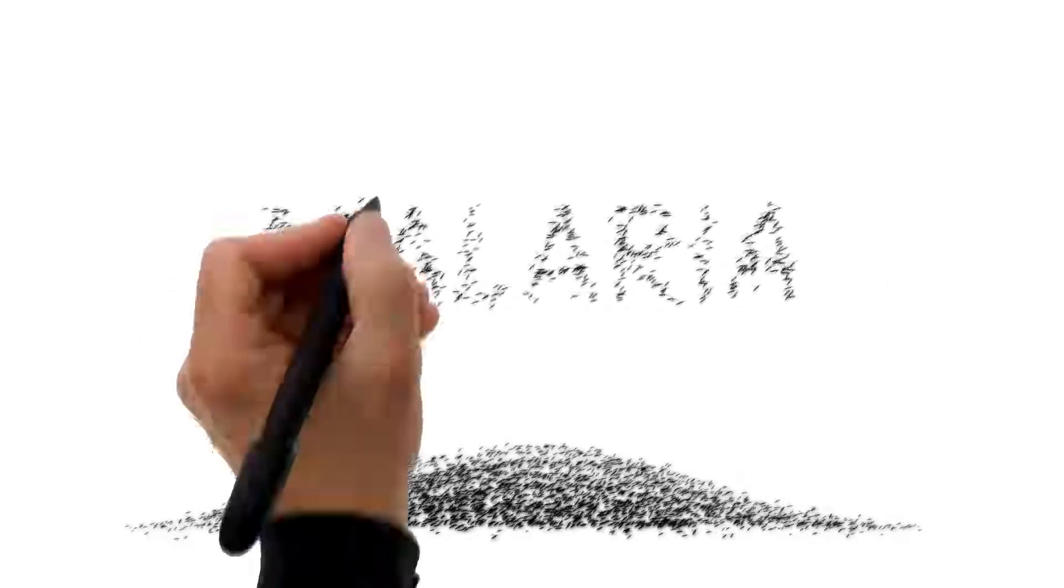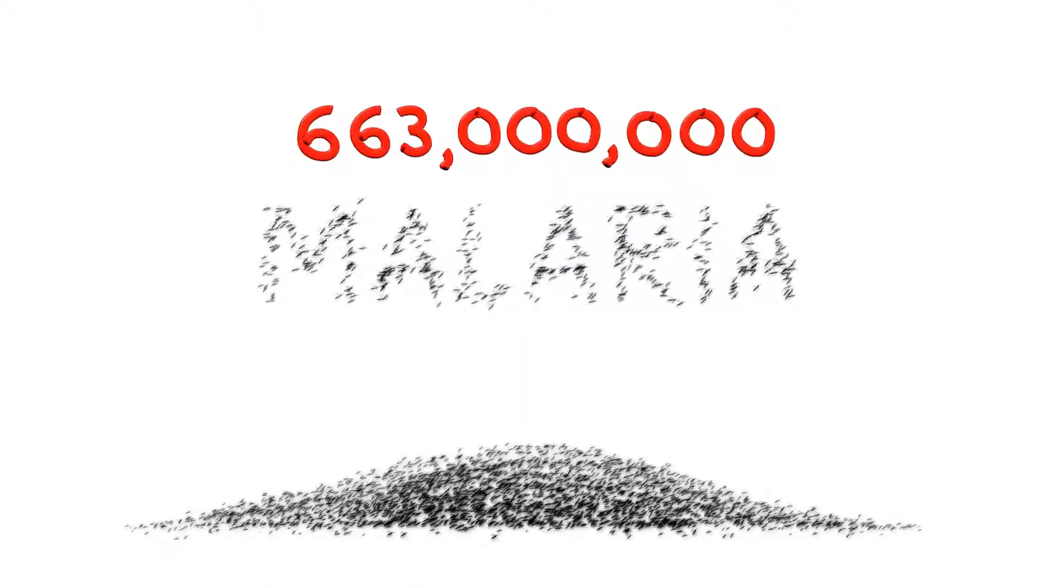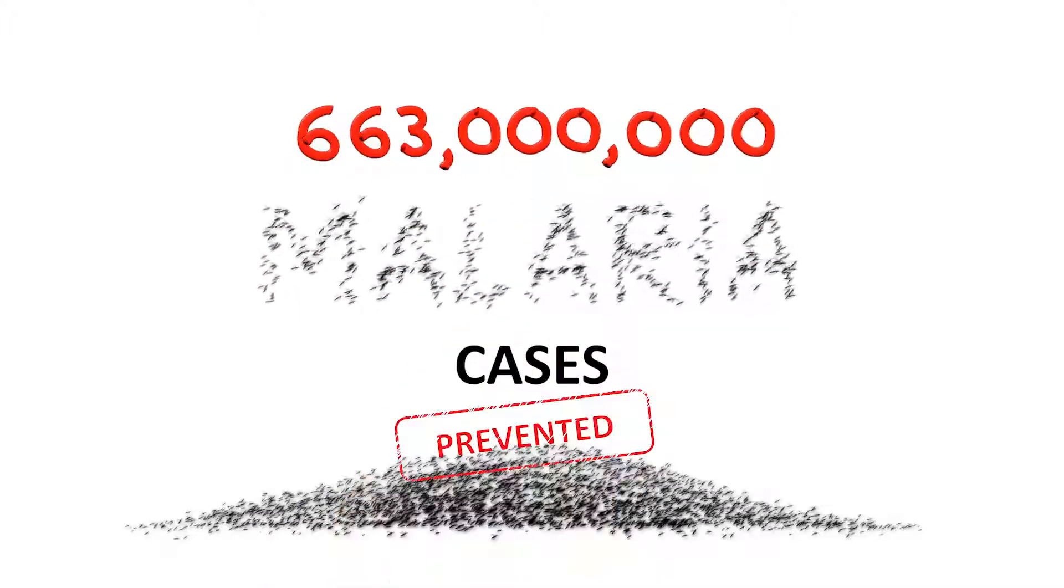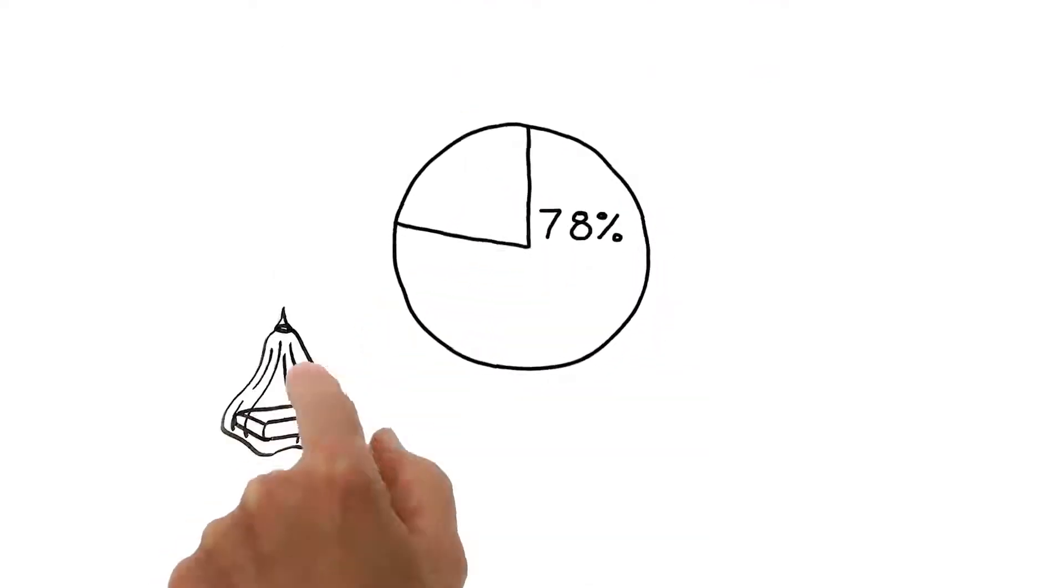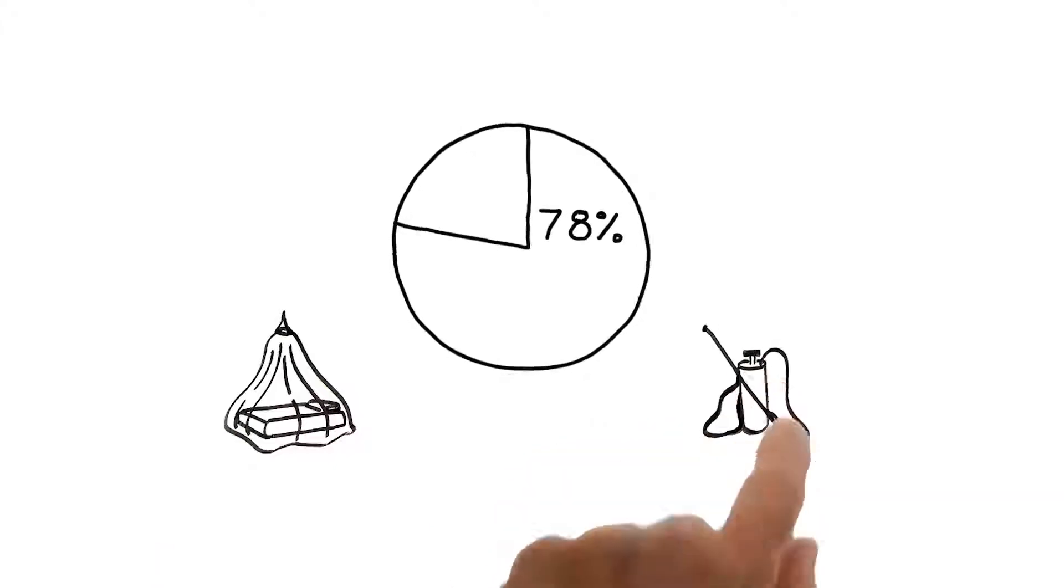Since 2000, 663 million malaria cases have been prevented. And of these, 78% are due to the use of insecticide-treated bed nets and indoor residual spraying.